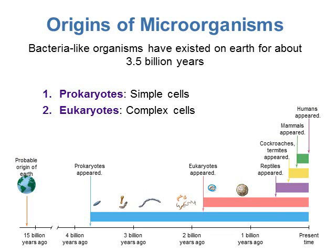Microorganisms have been around for a very long time, especially the bacteria-like organisms. These ones have existed on Earth for about 3.5 billion years. These bacteria-like organisms that first appeared are prokaryotic organisms, meaning that those organisms have very simple cells. From these prokaryotic organisms, we have eukaryotic organisms. These organisms have more complex cells, and in addition they can be multicellular organisms. So we're going to be looking at the different types of cells, their structure and function, and what type of organisms have prokaryotic versus eukaryotic cells.